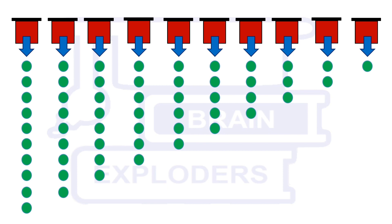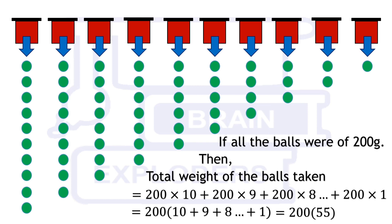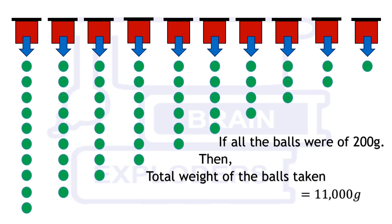For some time, assume that all the balls present here are of weight 200 grams. Then the total weight of these balls which are shown on the screen is 200 times 10 plus 200 times 9 plus 200 times 8 and so on up to 200 times 1. So the total weight here is 11,000 grams.